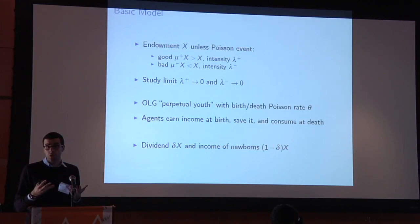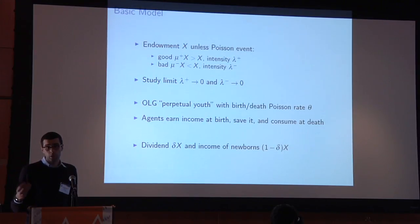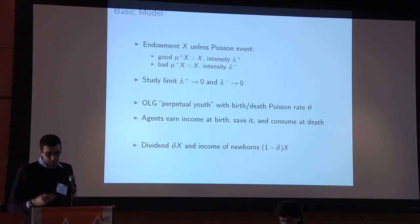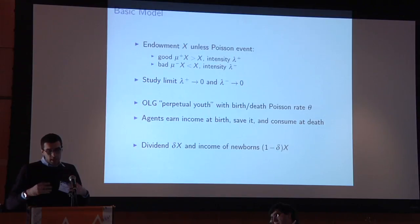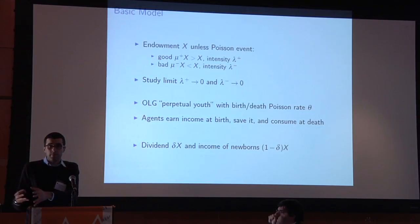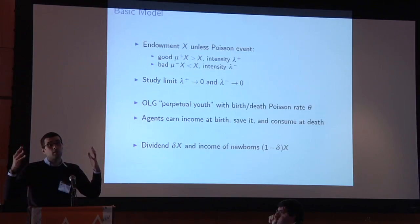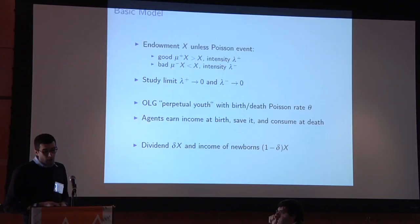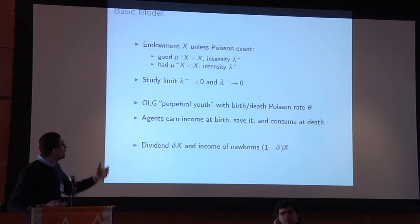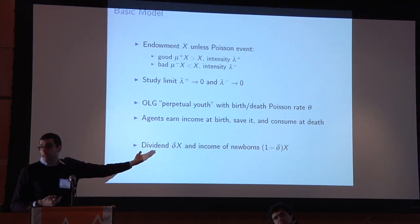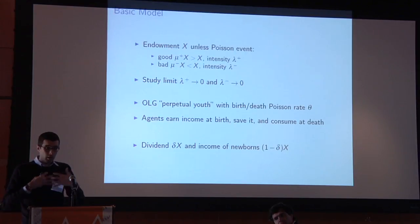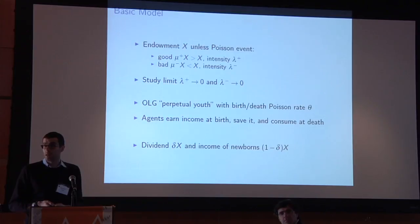My structure uses an overlapping generations framework — similar to Gauti's — with the perpetual youth model. Agents are born and die at a constant rate theta. An agent is born, earns some income, saves it, and consumes everything when he dies. It's a stylized life cycle: earn income during working years, save for retirement, then consume. Output is divided between the income of newborns — fraction (1 - delta) of the endowment — and dividends on assets traded in the economy, delta times x.